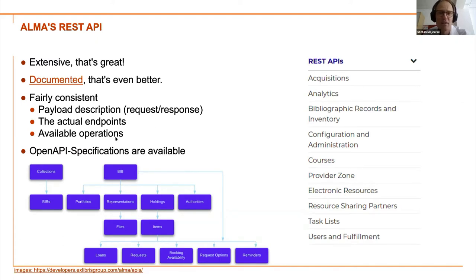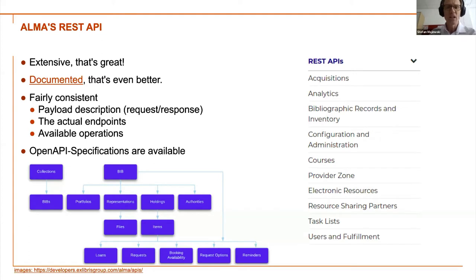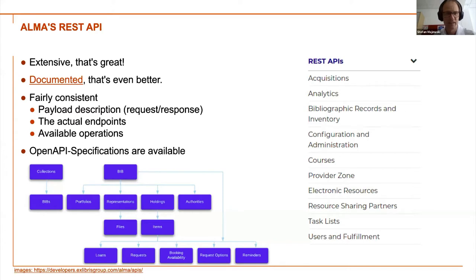The actual endpoints — the meanings of the endpoints, what you can do with them, and the operations on data and sections of ALMA — are well-defined. A technically interesting point is that the OpenAPI specifications are available, with different specifications for individual parts of the API: one for acquisitions, one for public catalog records, and so on. Overall, all main points you might encounter in ALMA are somewhat represented in the API, though not all functionality.